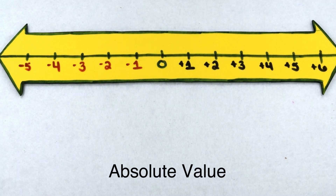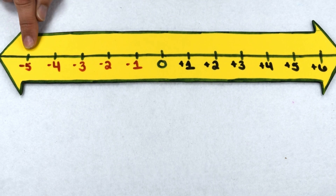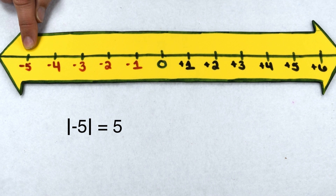All numbers have an absolute value. The absolute value of a number is its distance from zero. To find the absolute value of a number, let's look at where they fall on the number line. Negative five is five spaces from zero, so it would have an absolute value of five.